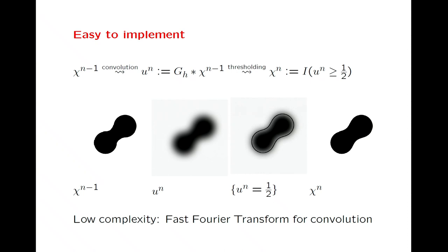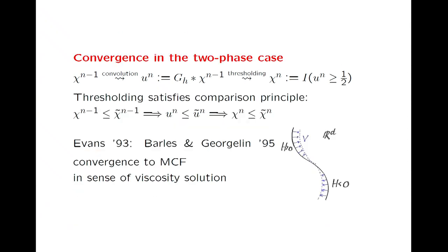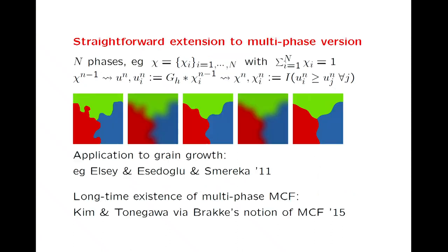Here is a numerical simulation: a dumbbell-shaped set at time step n minus 1. You blur the picture by convolving, find the level set of the function at one-half, and that defines the new set. You can detect that the thin part has thickened slightly, as you would expect for mean curvature flow. This is a low-complexity scheme because convolution can be done efficiently via the fast Fourier transform. It satisfies the comparison principle, which is the basis for convergence proofs.